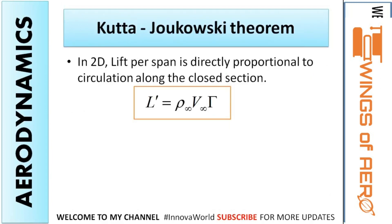Next comes the Kutta-Joukowski theorem. This theorem is applicable for two dimensions. In two dimensions, it states that the lift per span is directly proportional to the circulation along the closed section. It can be written as L-prime equals density times velocity times circulation.